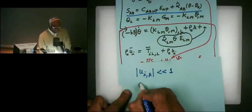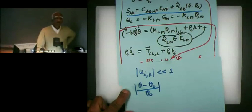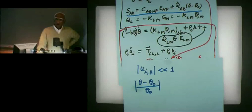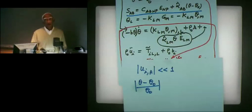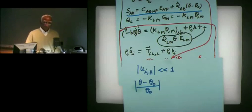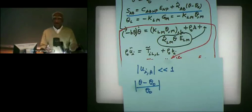Similarly, theta minus theta zero over theta zero — so now it becomes non-dimensional, where theta zero is the temperature of the body in the reference configuration, typically room temperature. If you don't change the temperature from room temperature by more than one or two percent — room temperature is about 300 Kelvin, so that's like three or five degrees change. If you walk outside, there's a considerable change, so it's not one or two percent.